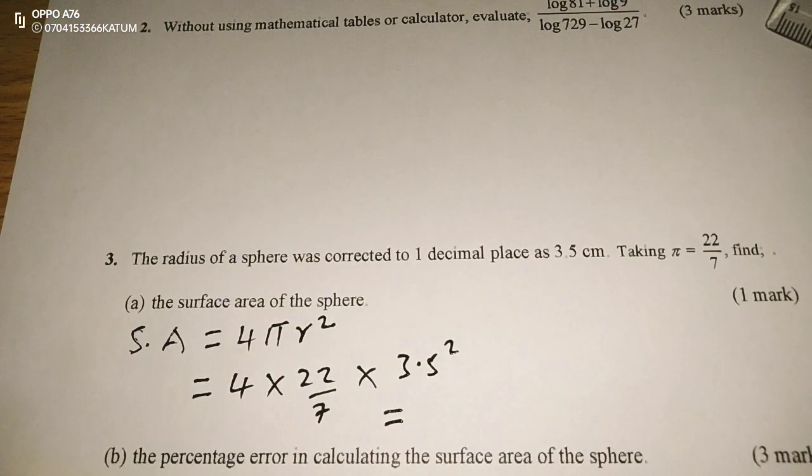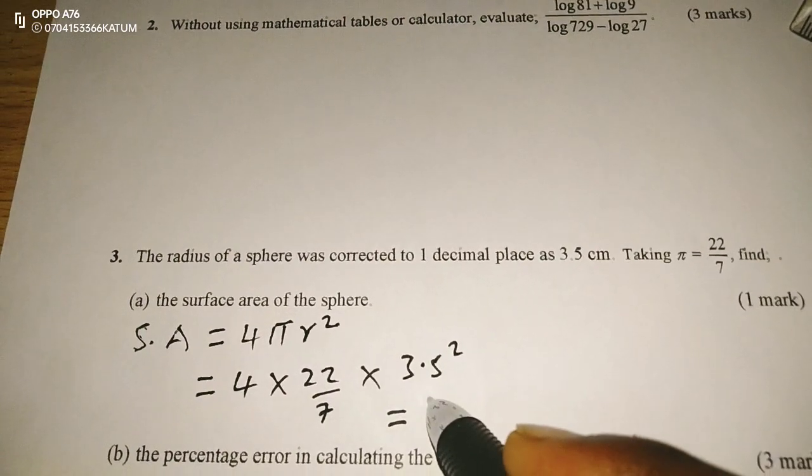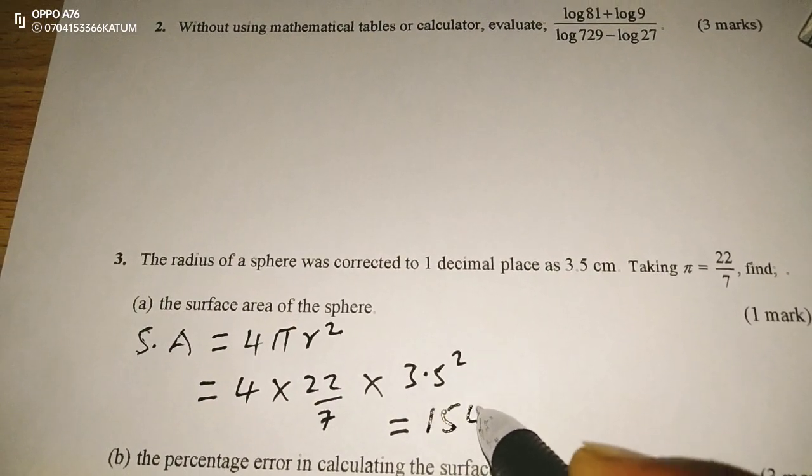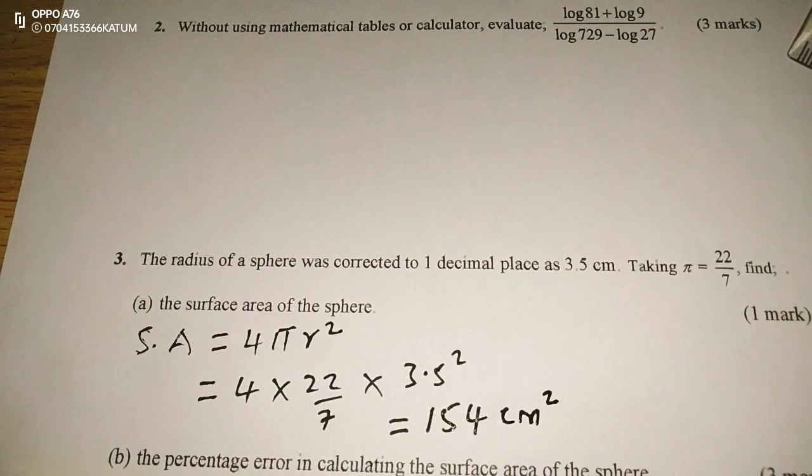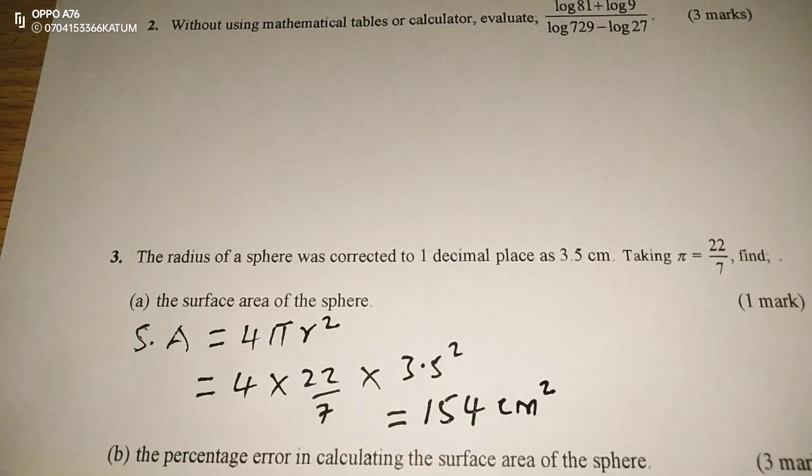This computed is going to give us, we have 4, 22 out of 7 multiplied by 3.5 squared. This is giving us exactly 154 square centimeters.